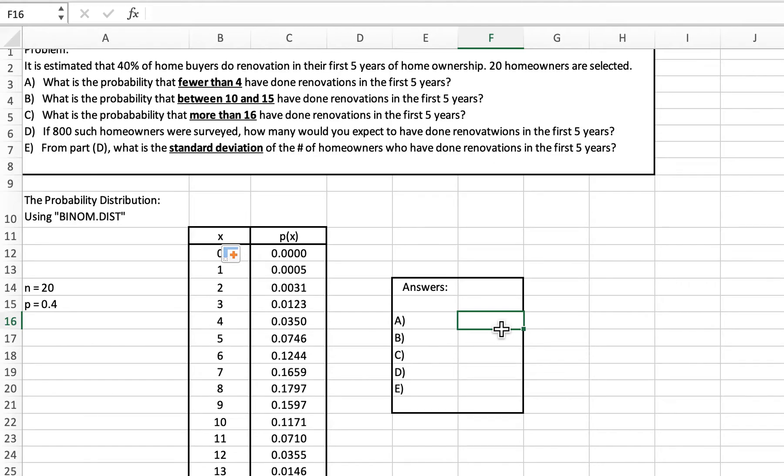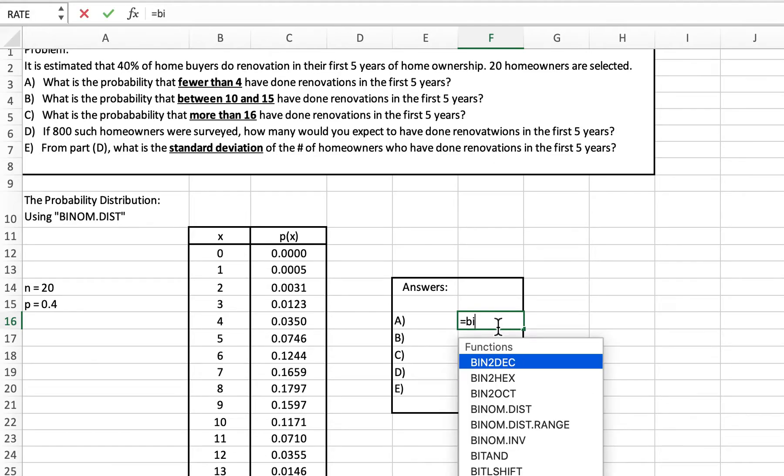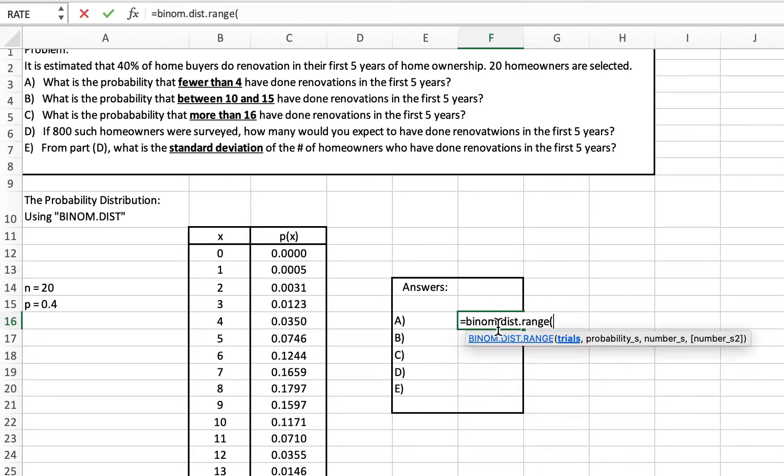Another nice function you could use is one called binom.dist.range. What we're looking at there is similar information. We have a number of trials, which is 20. We have a probability of success, which is 0.4. And in this particular case, you want between zero and three successes. Add those up, and that's what it gives us.